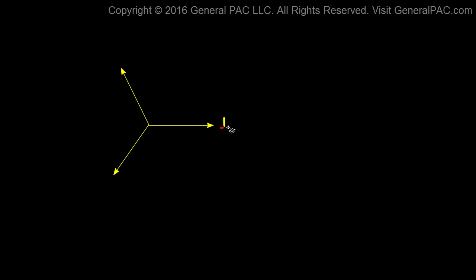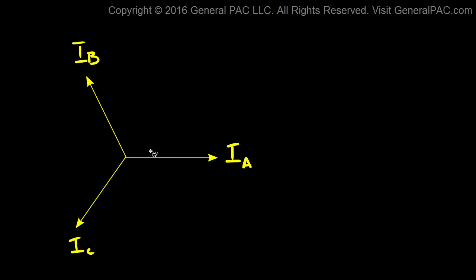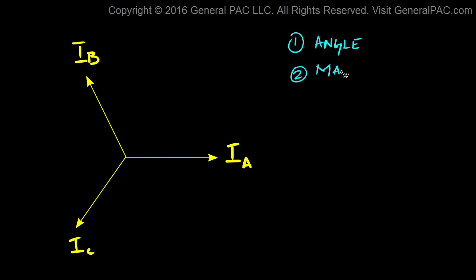Now suppose that we have these three phasors. Let's call this phasor IA, this phasor IC, and this phasor IB. By inspection I can tell you that this is a balanced set of three phase currents. To verify that, we would have to check three rules. Rule number one has to do with the angle. Rule number two corresponds to the magnitude. And rule number three is the sequence.